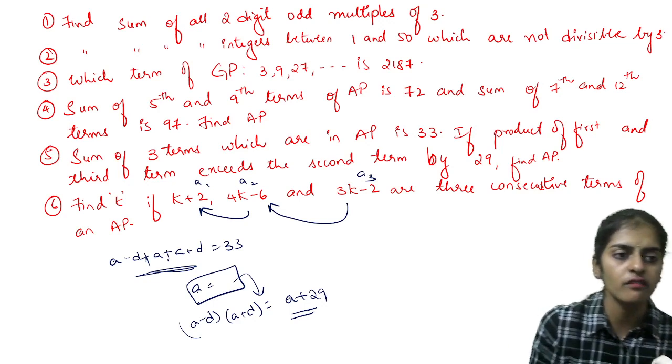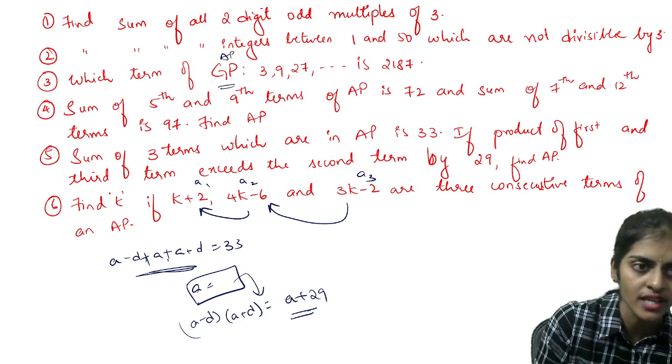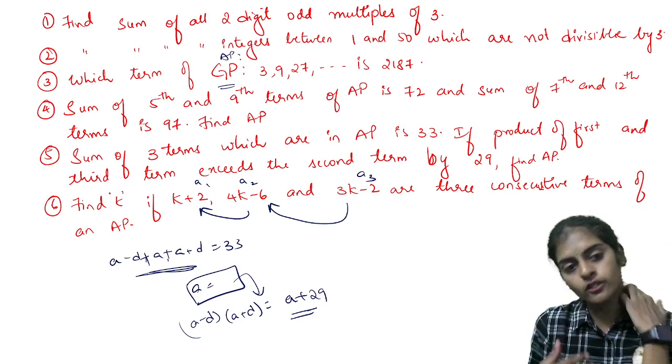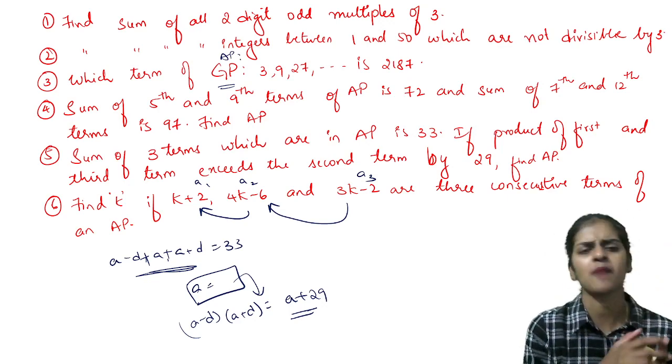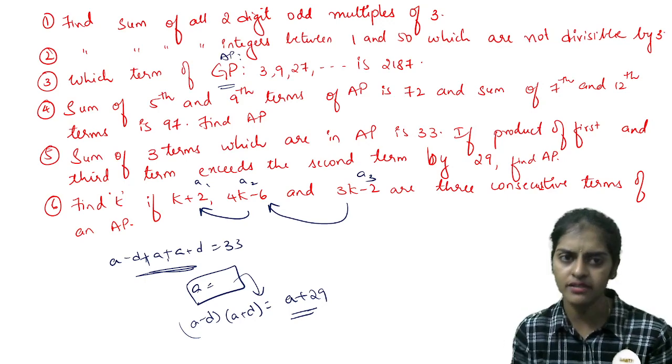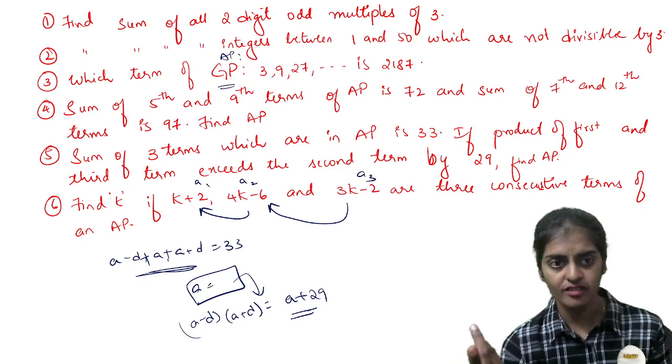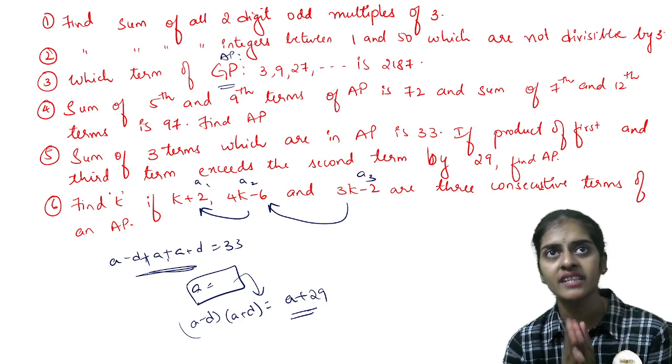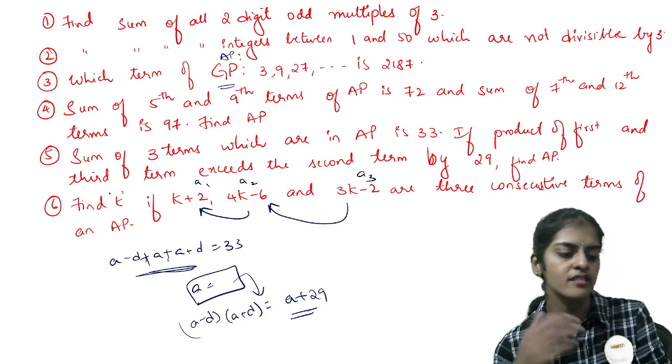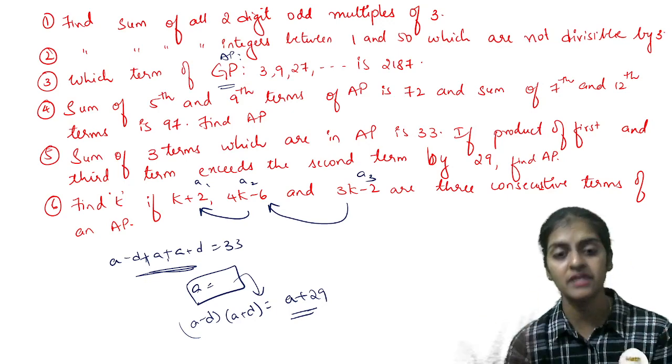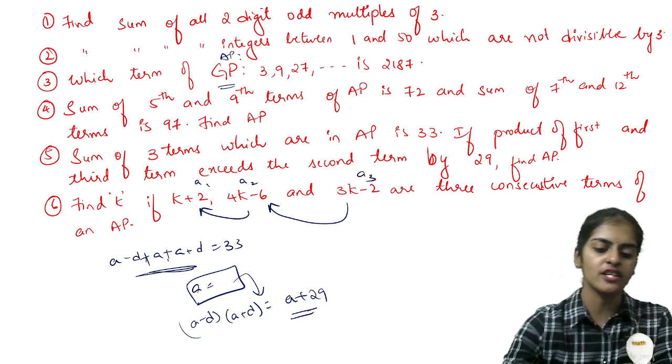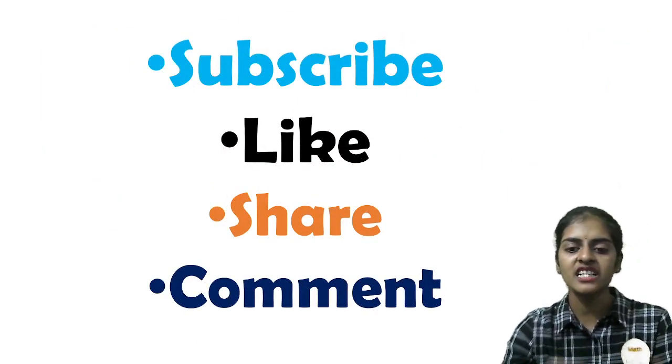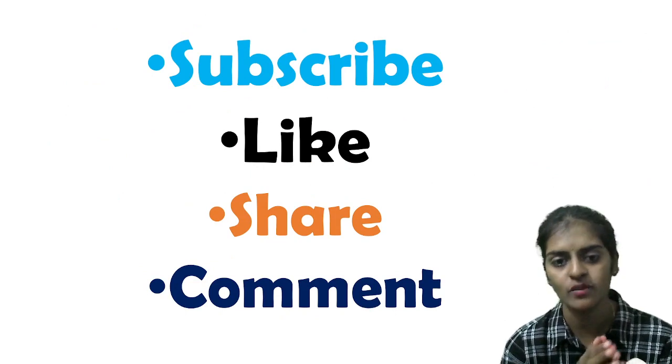These are top six questions I wanted to give you. Here, instead of GP they can give you AP also. Apart from these, there are no new models. Instead of multiples of three, they may ask multiples of five. Whatever it is, the model is the same. You will not get questions apart from this model.